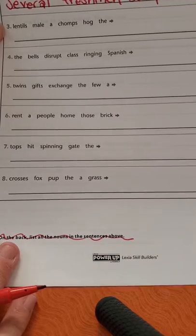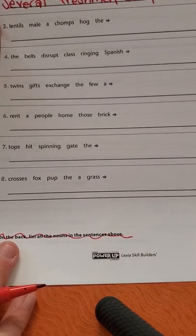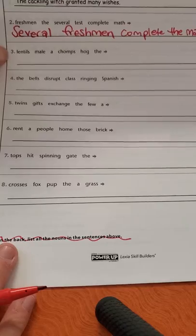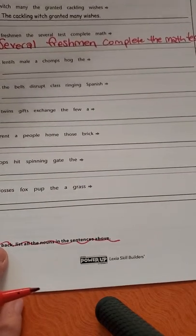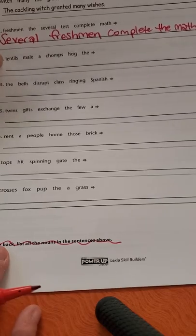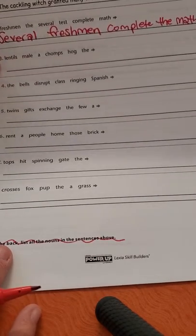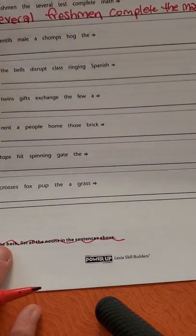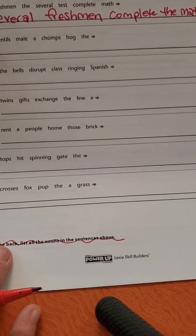So some of these words might be kind of strange to us. You can definitely get a dictionary if you need to, to help you out with what the words mean. Lentils is like another word for beans. So if that helps you. It says lentils, mail, a, chomps, hog, the.